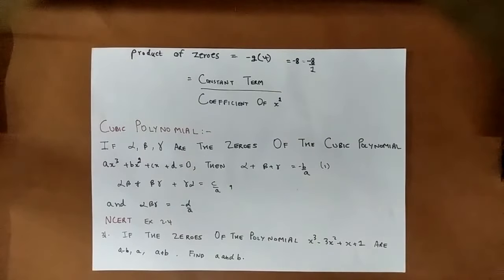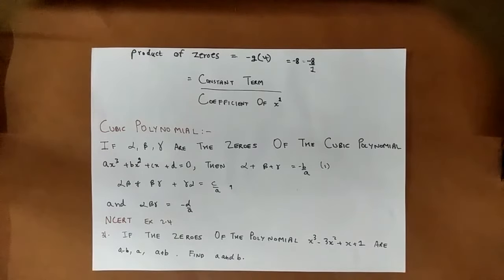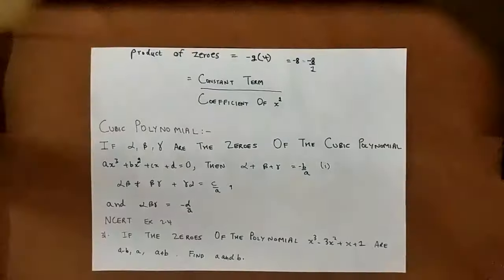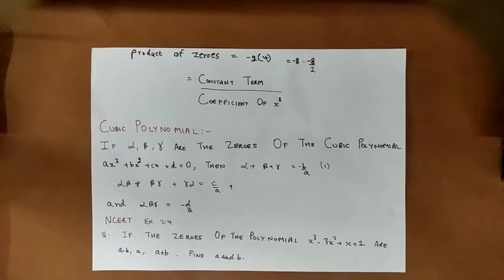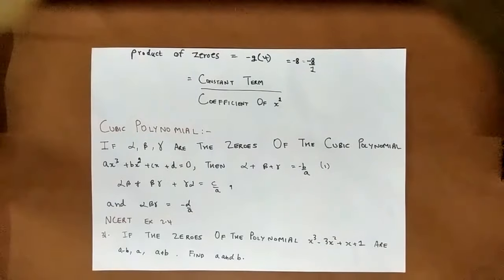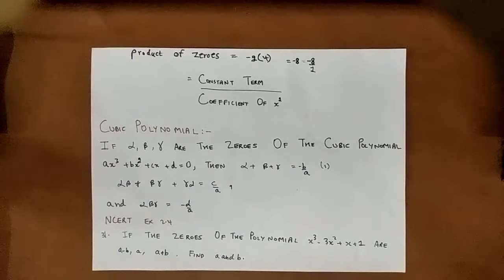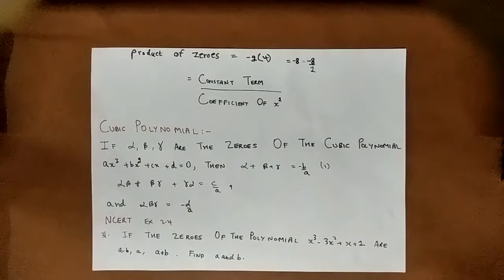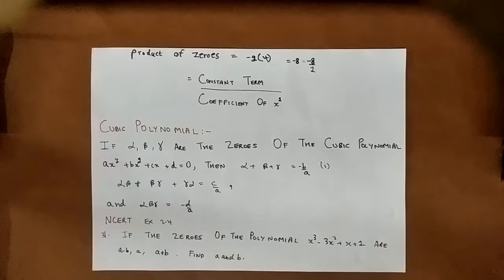Product of zeros ka ahon ga either minus 2 into 4 which is equal to c by a. c is the constant term and coefficient of a is coefficient of x square, which is minus 8 upon 1, which is equal to minus 8, which is equal to product of zeros. Hence, the relationship verified karniti — product of zeros and sum of zeros has been verified, woh verified ho chughi hai.